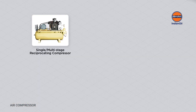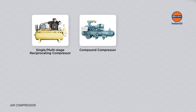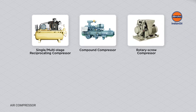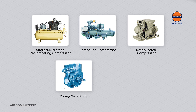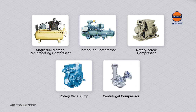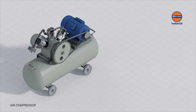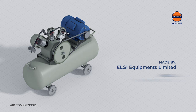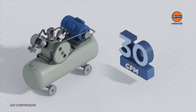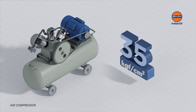Types include: single or multi-stage reciprocating compressor, compound compressor, rotary screw compressor, rotary vane pump, and centrifugal compressor. This is an example of a three-stage reciprocating compressor made by ELGI Equipments Limited — a THPC 1500T model designed to supply compressed air at a flow of 30 CFM, 0.85 M3 per minute, at a pressure of 35 kgf per centimeter square.